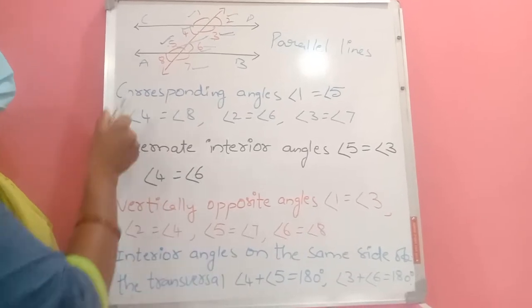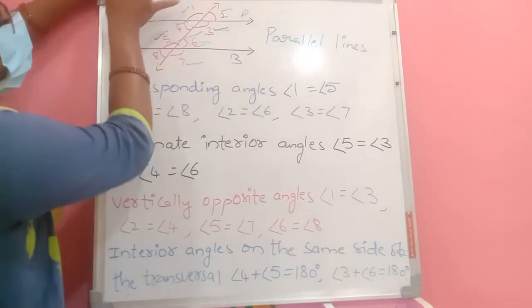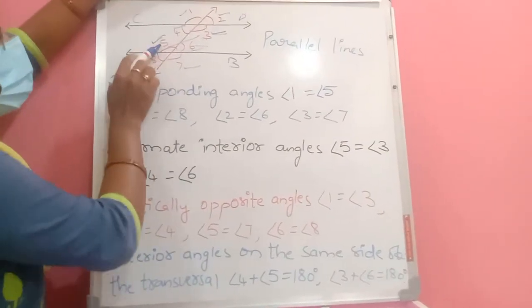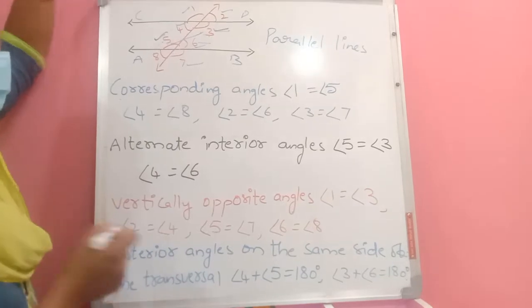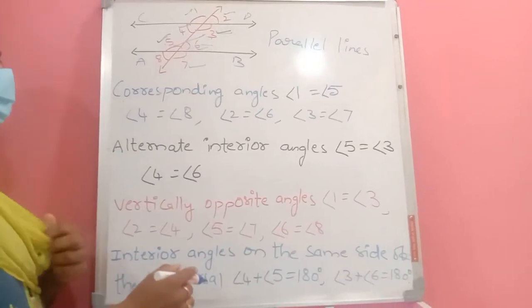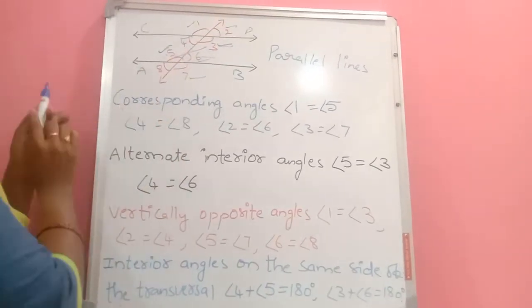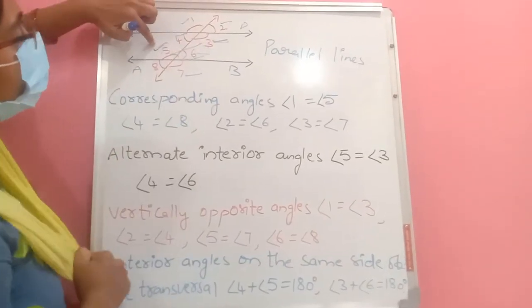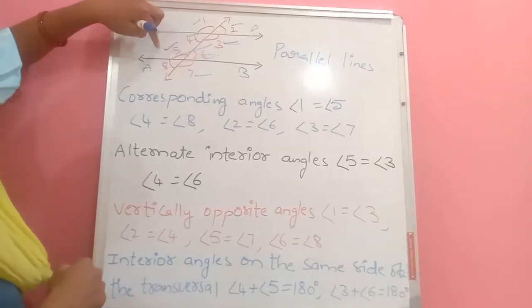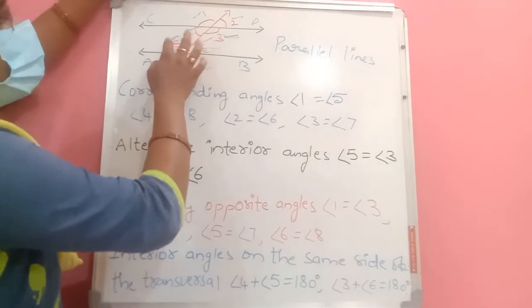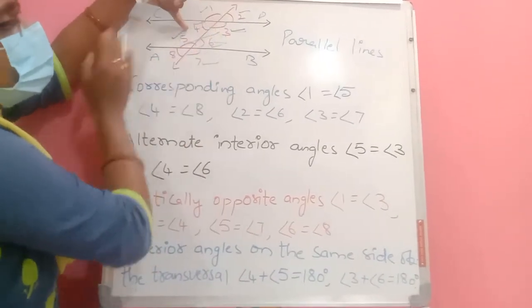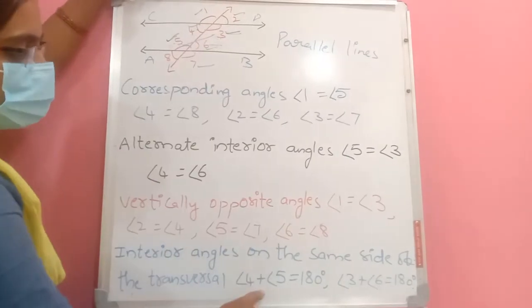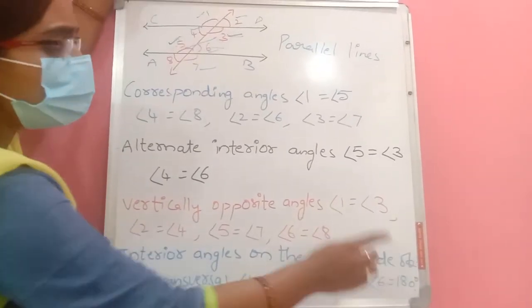Vertically opposite angles — such as angle 1 and 3, angle 2 and 4, angle 5 and 7, angle 6 and 8 — are equal. Interior angles on the same side of the transversal, such as angles 4 and 5 or angles 3 and 6, are supplementary, meaning their sum is 180 degrees.